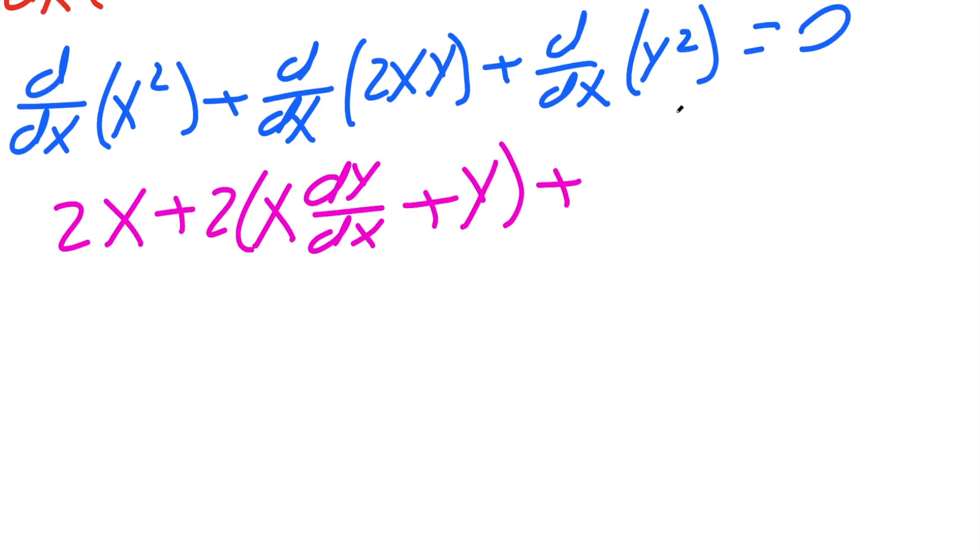now we need to take the derivative of y². That's going to give us 2y dy/dx. This implicit differentiation equals zero.